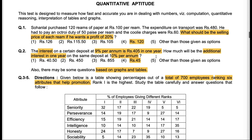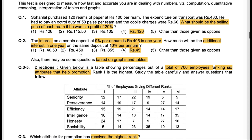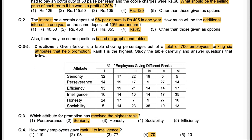Let's come to Quant. Question 1 — what should be the selling price of each REAM if he wants a profit of 20%? This is a straightforward question. You have been given cost and the required profit percentage; you just have to figure out the selling price. The second question is also simple — instead of giving you principal, you have been given interest and time. If an additional interest in one year is required at a rate of 10%, what would the interest be in absolute terms? Very simple.